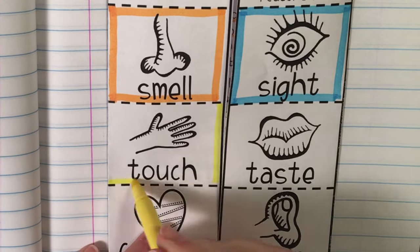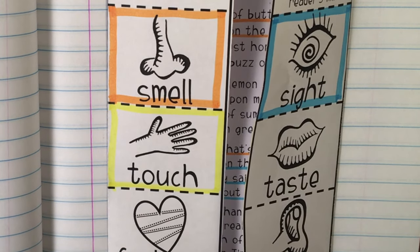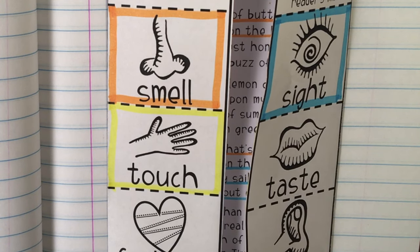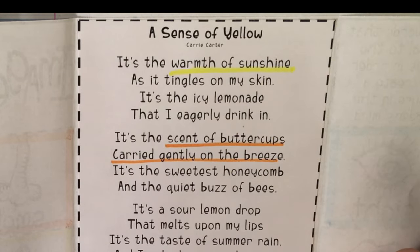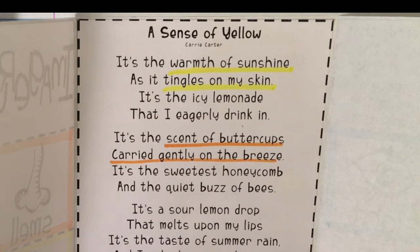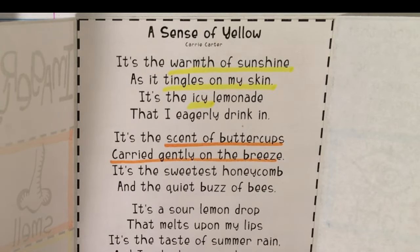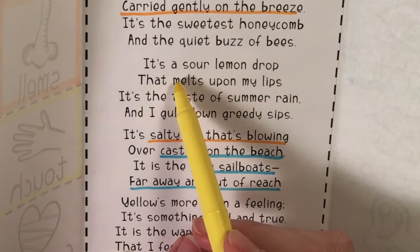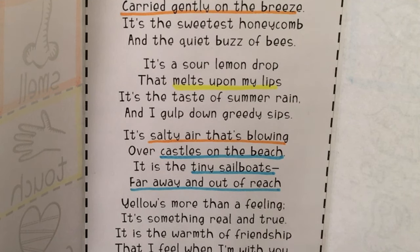Now we're going to look at some examples of imagery using the sense of touch. This is probably one of the easiest ones — it goes along with anything you can imagine what it feels like: soft, bumpy, rough, or smooth. We've got "the warmth of sunshine" — I can imagine being outside and having the sun shine down on my skin, feeling my skin heating up. It describes it as "tingles on my skin" and it really does — if you stand in the sun too long you get that tingly feeling of heat. Here we're describing "icy lemonade" — it's really cold, which is what we want in the summer. And then "a sour lemon drop that melts upon my lips" — I can imagine that candy starting to melt immediately, giving that sense of sticky, yummy lemon candy on my lips.